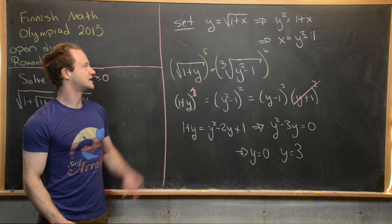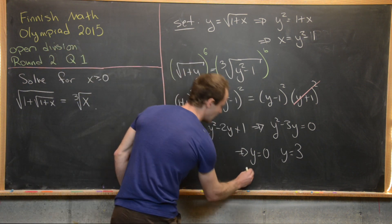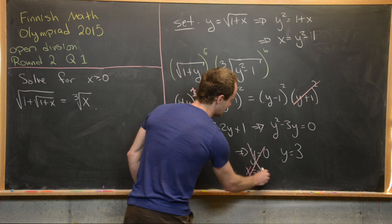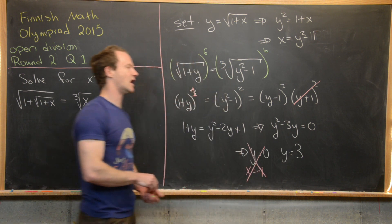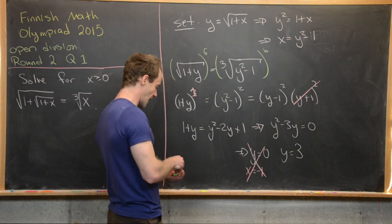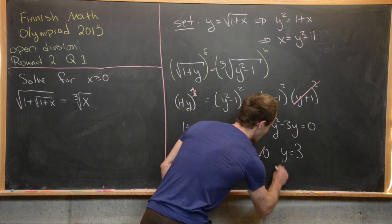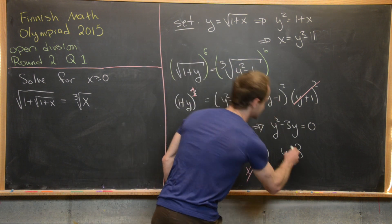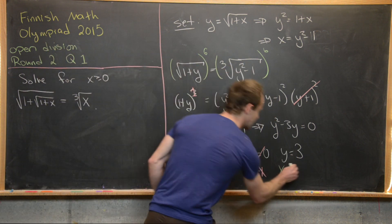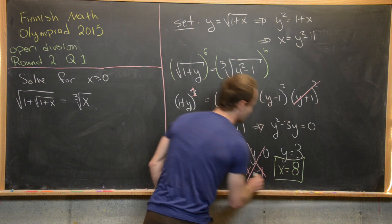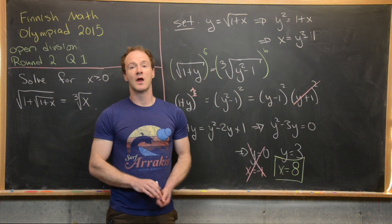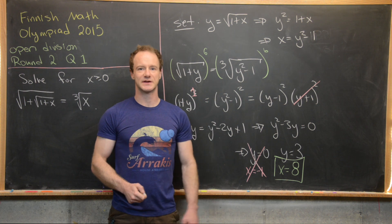If y = 0, then x = 0² − 1 = −1, which is not a non-negative solution. But if y = 3, then x = 9 − 1 = 8. That is indeed our only non-negative solution.